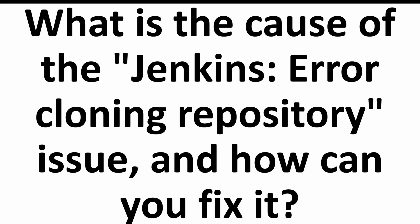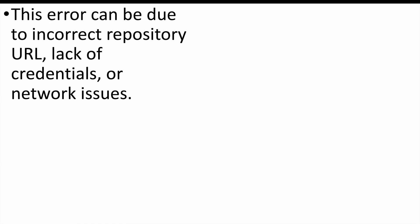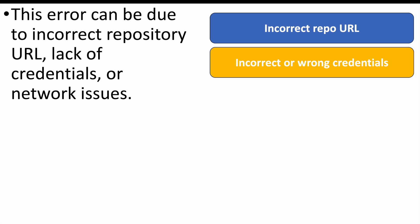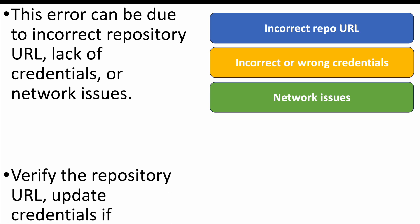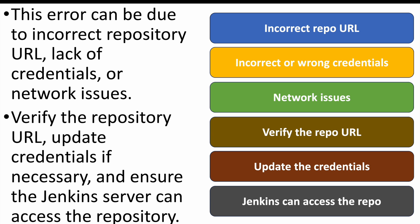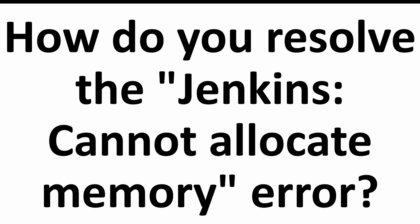The next question: what is the cause of the 'Jenkins error cloning repository' issue and how can you fix it? This error occurs when Jenkins cannot connect to the repository, such as a GitHub repository. Verify the repository URL is correct, update the credentials, and ensure Jenkins can access the repo. Common causes include incorrect credentials or an incorrect URL.